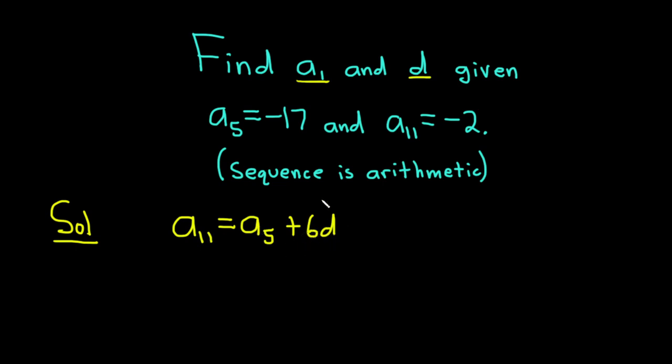Now we can plug in the values of a₅ and a₁₁ into this equation to solve for little d. So a₁₁ we said was -2. That's equal to a₅, which is -17, plus 6d.